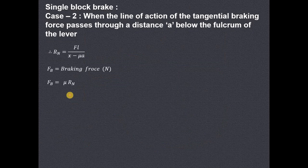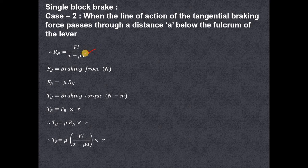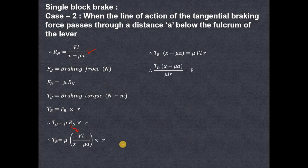Again, braking force is mu times Rn, and braking torque is braking force times radius R. Substituting FB equals mu times Rn, and substituting the value of Rn obtained from the moment equation, we get: torque equals mu times FL divided by (X minus mu·A), times R. Cross-multiplying: TB times (X minus mu·A) equals mu times F times L times R, where mu is the coefficient of friction.